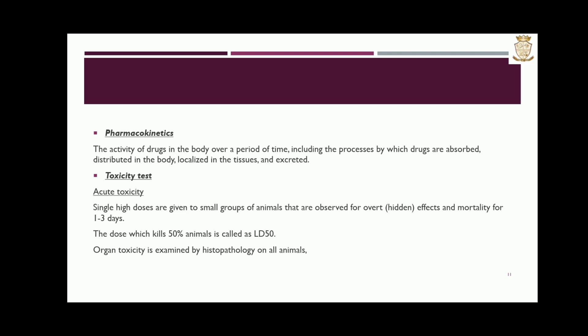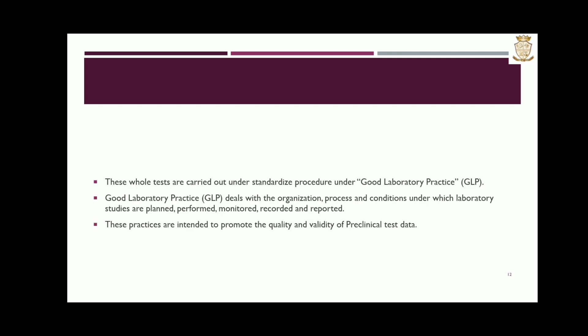Toxicity test — Acute toxicity: single high doses are given to small groups of animals that are observed for overt effects and mortality for 1 to 3 days. The dose which kills 50% of animals is called LD50. Organ toxicity is examined by histopathology on animals. These tests are carried out under standardized procedures under Good Laboratory Practice (GLP). GLP deals with the organization, process, and conditions under which laboratory studies are planned, performed, monitored, recorded, and reported. These practices are intended to promote the quality and validity of preclinical test data.